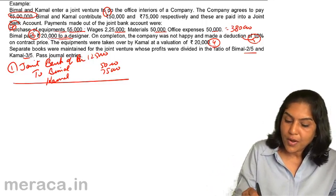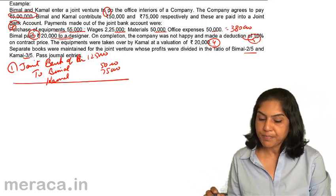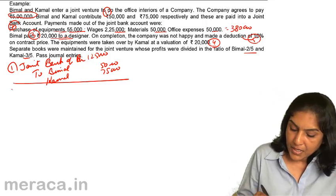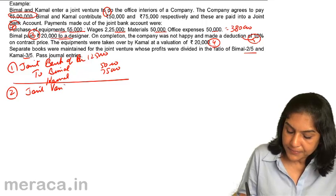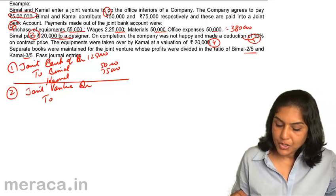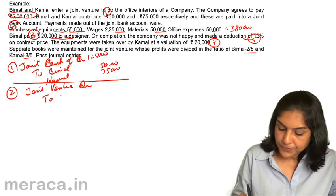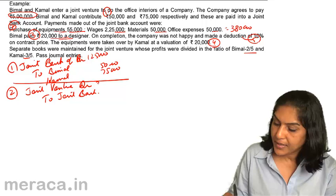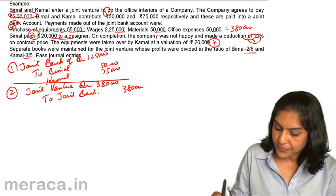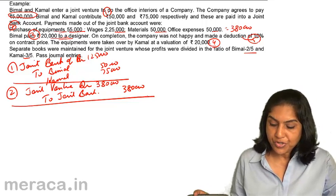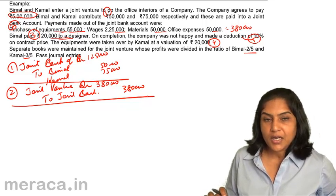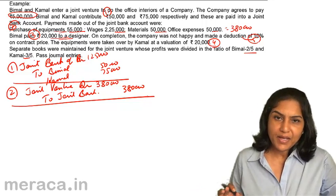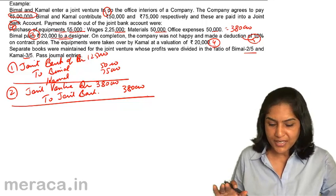Entry two: purchases and expenses of 3,80,000 are being spent. Joint venture account debit to joint bank 3,80,000. The check issued happens to be more than the capital contribution, but since there are no dates, maybe money was received from the company earlier in installments, or maybe the bankers allowed an overdraft. We are not going into those details now.